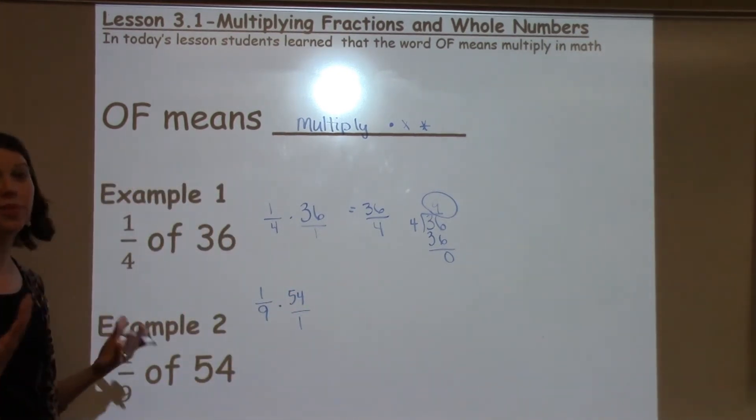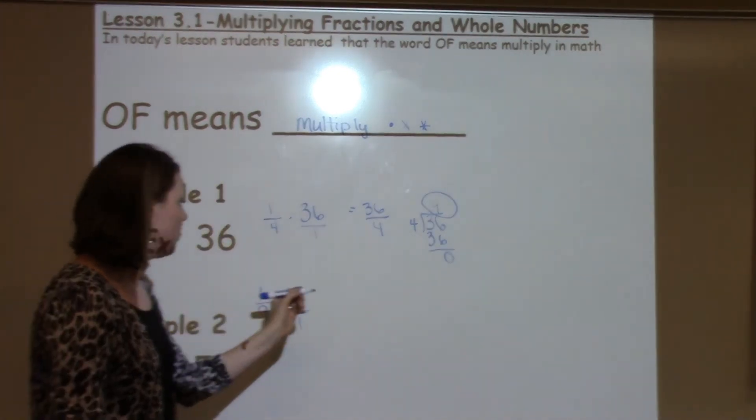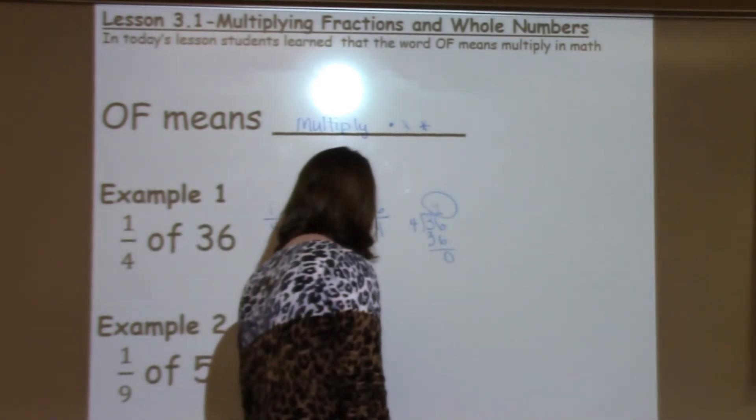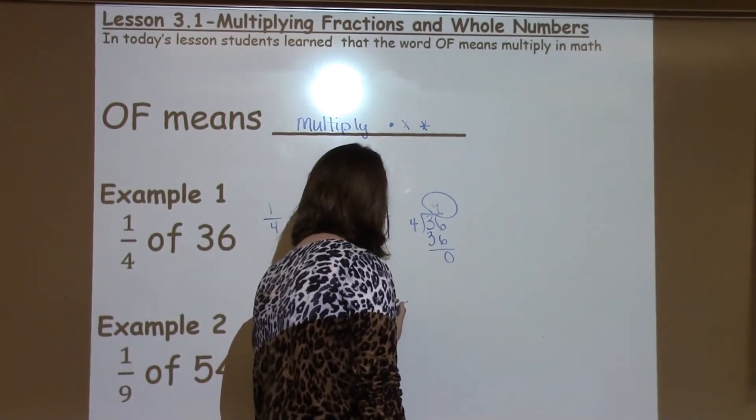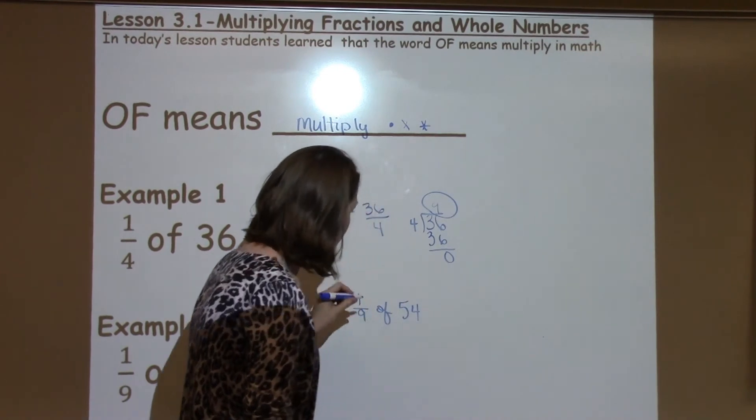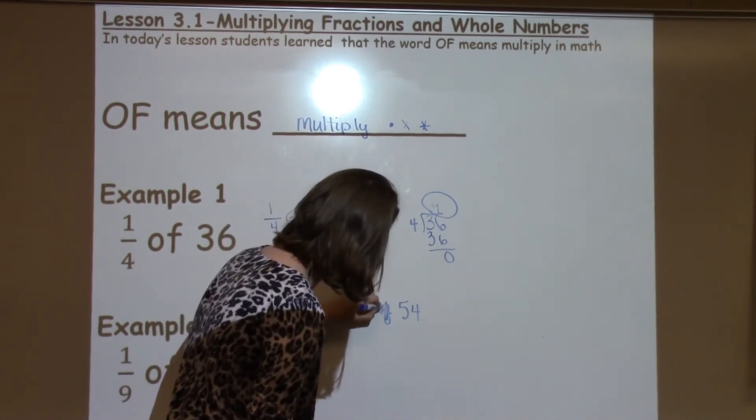Another way that I've shown my students is with what I call the magic box. You can write 1 ninth, you write 'of 54', and you change the 'of' into a magic box just like this.